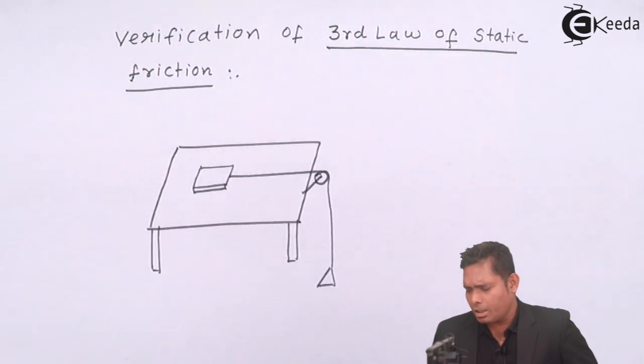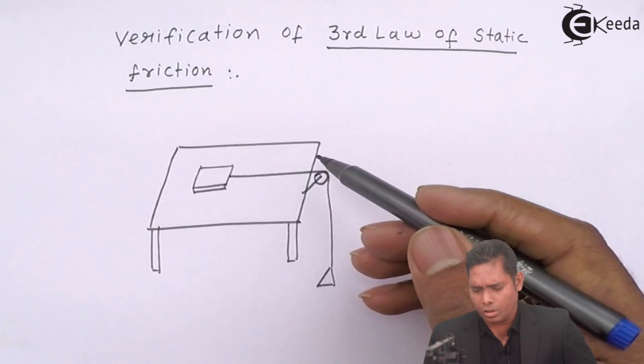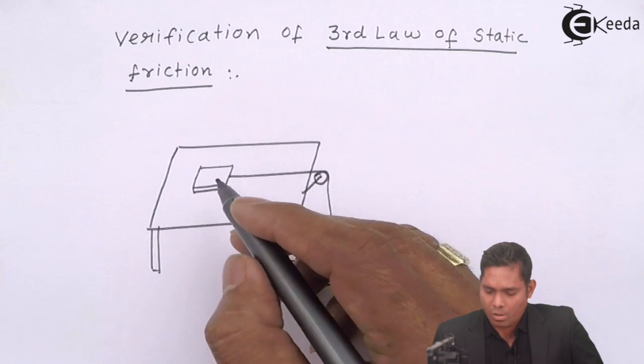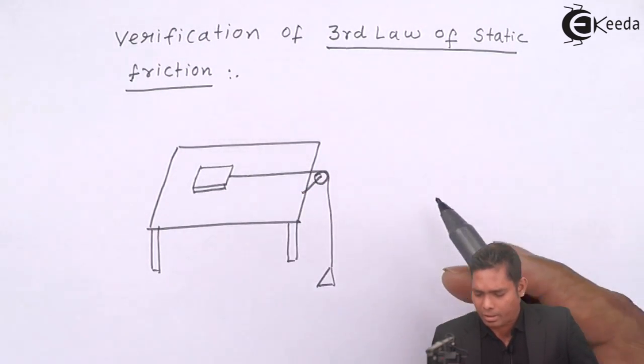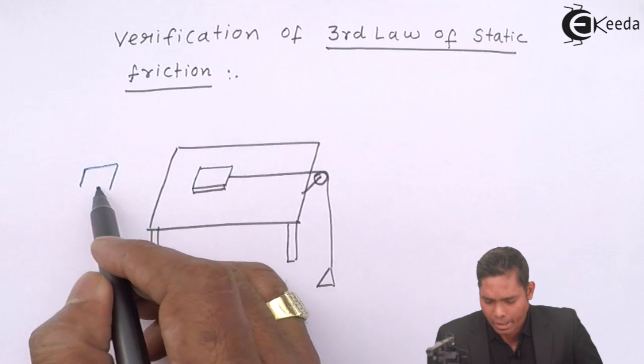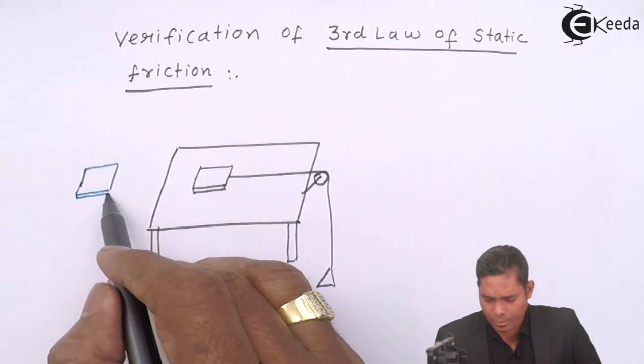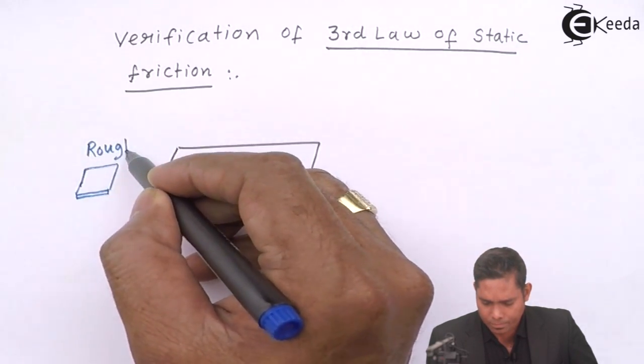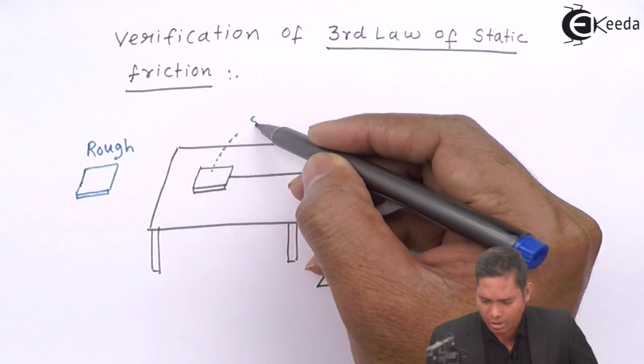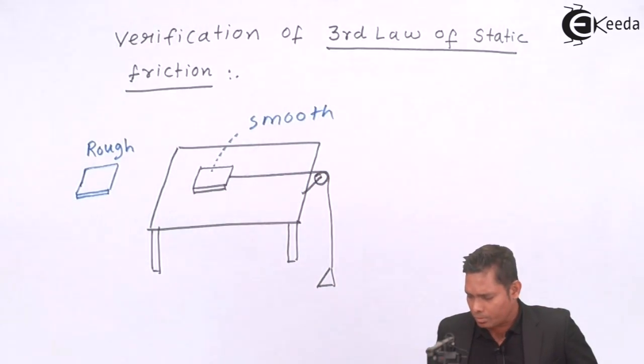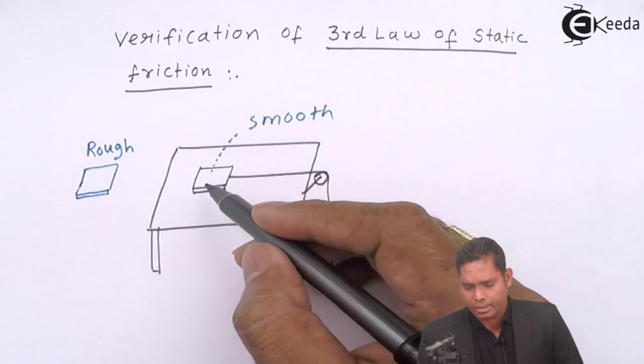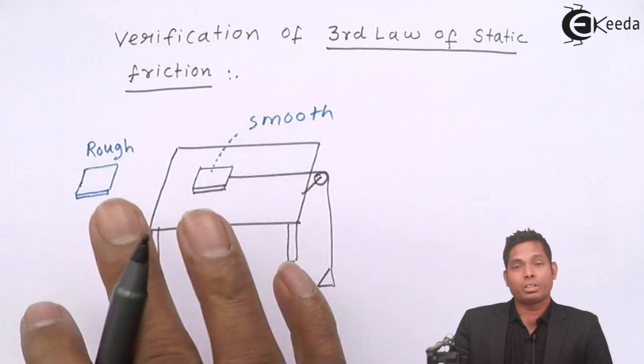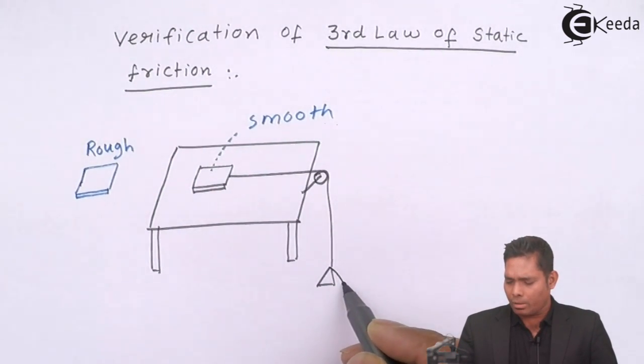This time I will take two different blocks. The surface of the table is the same, but I will consider two different blocks. One block is rough, and this one is smooth. It is found that if I keep on adding the mass, at a particular force f1, the block starts sliding.